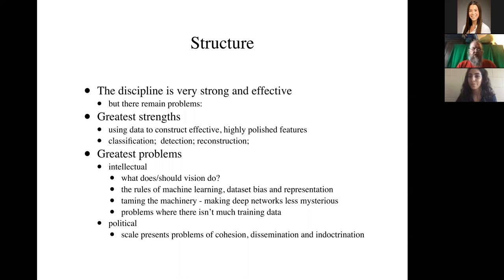So the structure of the talk, basically, the computer vision discipline is very strong and very effective, but there are some problems. I will talk about our greatest strengths, which are using data to construct effective and very highly polished features and just how magnificently good we are at image classification, at object detection and at reconstruction from images. But there are problems and the main problems are intellectual problems and they're very interesting ones.